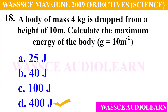Question 18: A body of mass 4 kg is dropped from a height of 10 m. Calculate the maximum energy of the body, given that g = 10 m/s². The possible answers are A. 25 J, B. 40 J, C. 100 J, D. 400 J. And the answer is D, 400 J.